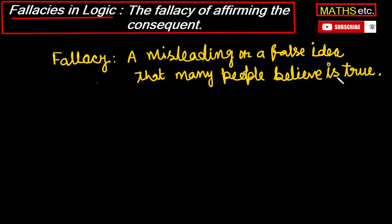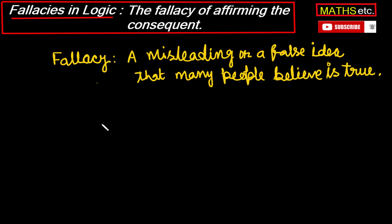For example, the belief that the earth is flat — that was a fallacy. It was a false idea, because now we know that the earth is round. So, in logic, fallacy is due to incorrect reasoning.